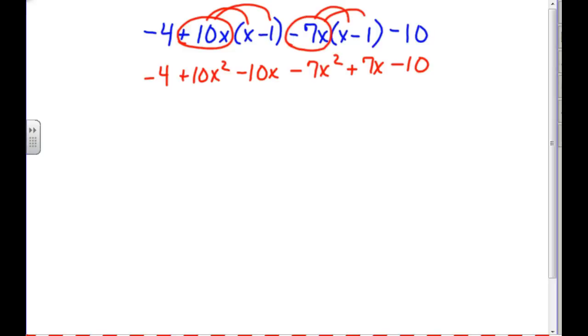When you combine like terms, because you know that you want your quadratic equation in standard form, start with the x². And so we have a 10x², and we have a minus 7x², giving us, for our x² term, we will have 3x². Then go to the x term. When we look across the problem for the x terms, we have a minus 10x and a plus 7x. And when we combine those, we have minus 10 and plus 7.